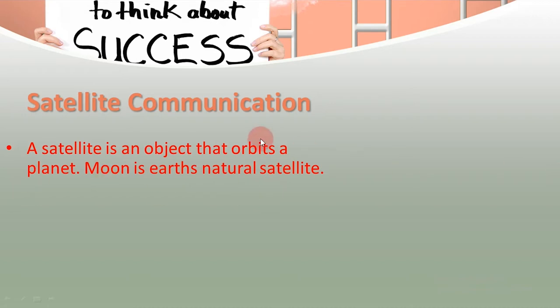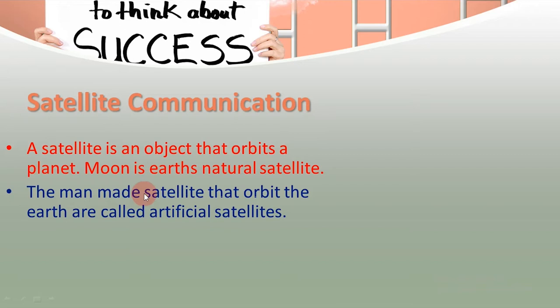The planet Earth also has artificial satellites. They are sent to orbit the Earth. They revolve and perform different functions. The man-made satellites that orbit the Earth are called artificial satellites.